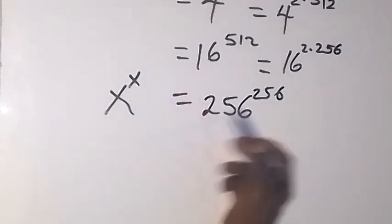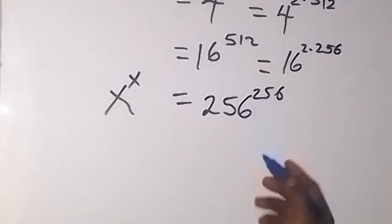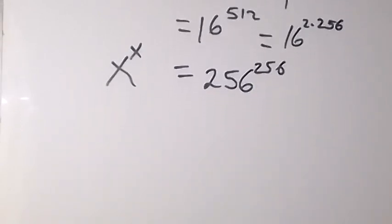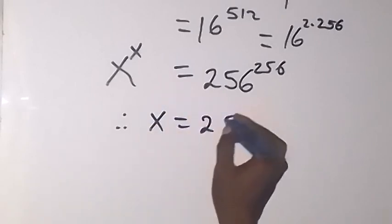We can see that we have the same number as the base and as the exponent. So therefore we can conclude here that x equals 256.